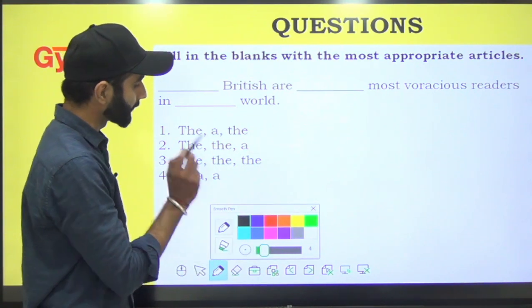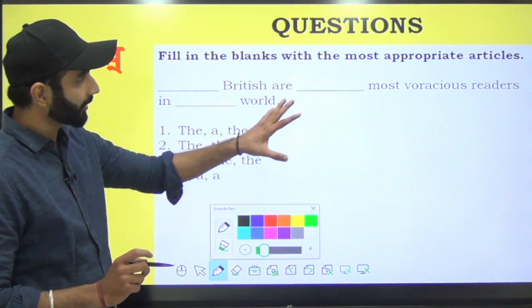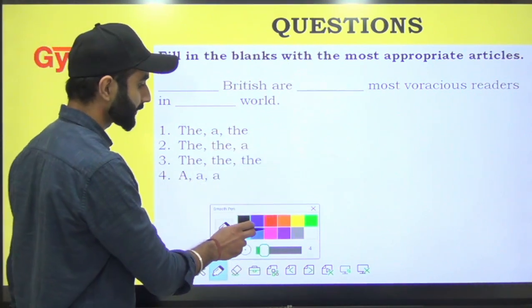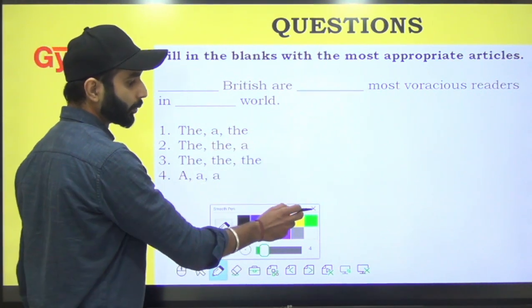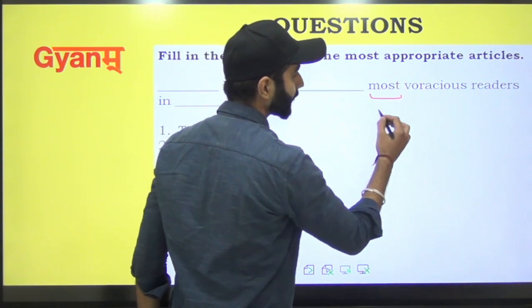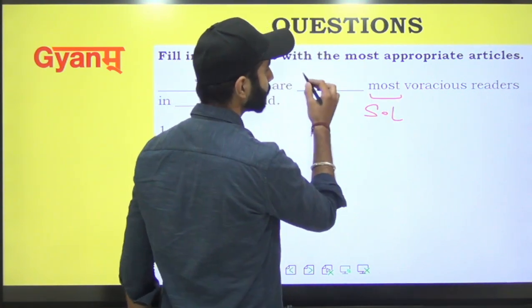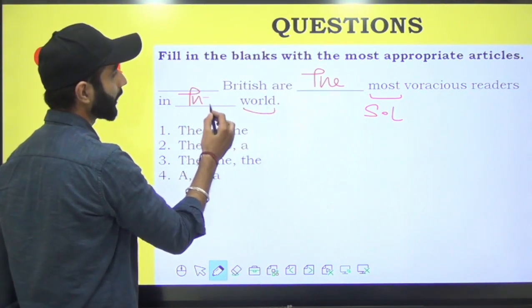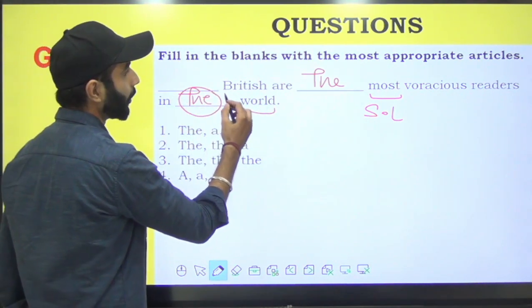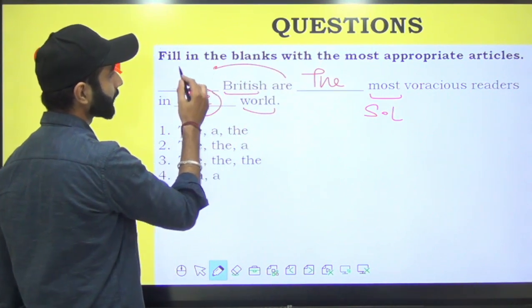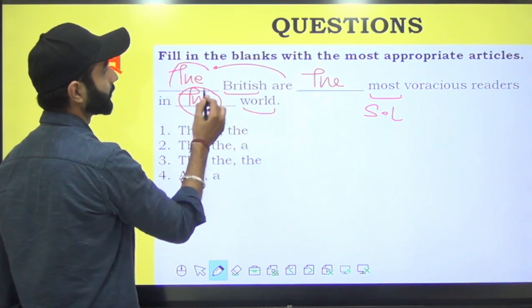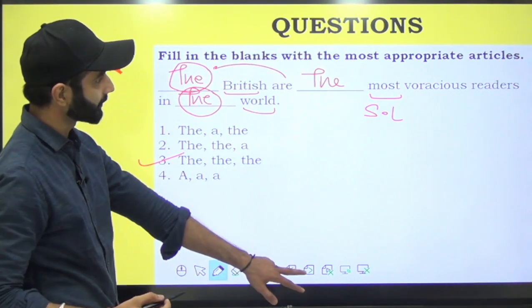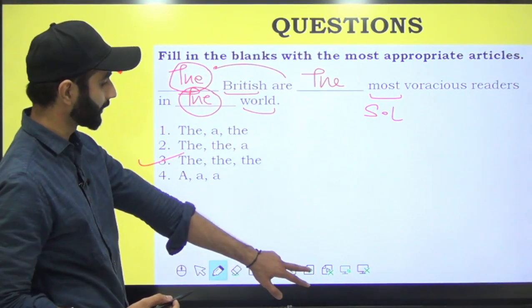Now what it says in this dash: British are most voracious readers in world. Hungry is called voracious, right? So it says most voracious. So most is something that gives you superlative degree. World is the United Kingdom, so here the word. And British is the word. He is talking about the class over there. So there is the word. It should be: the British are the most voracious readers in the world. Good.